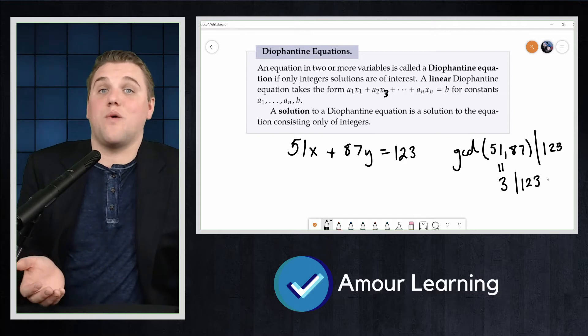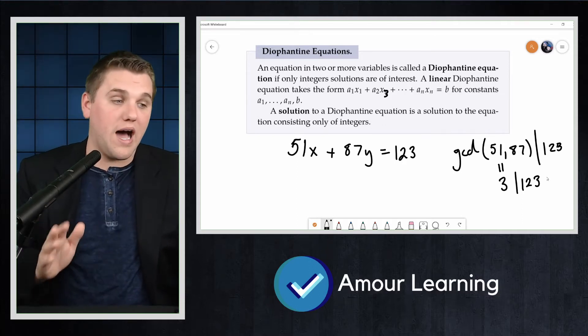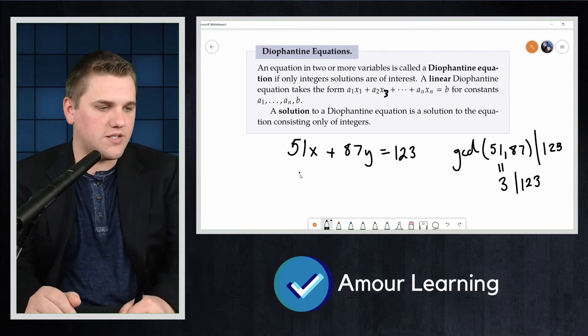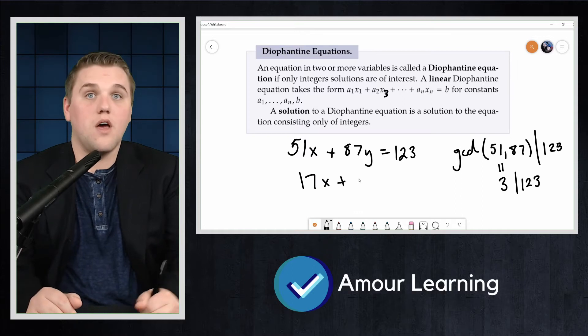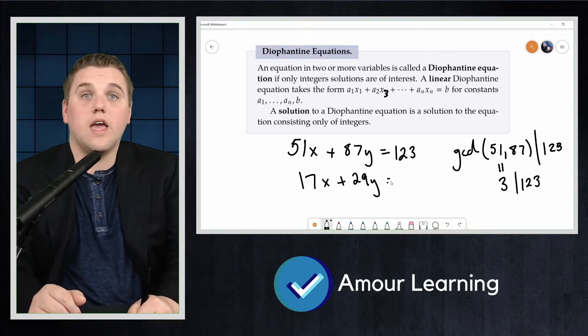At this point we might as well factor out this greatest common divisor. We're going to divide everything by 3 on both sides of the equation and so we end up getting 17x + 29y = 41.